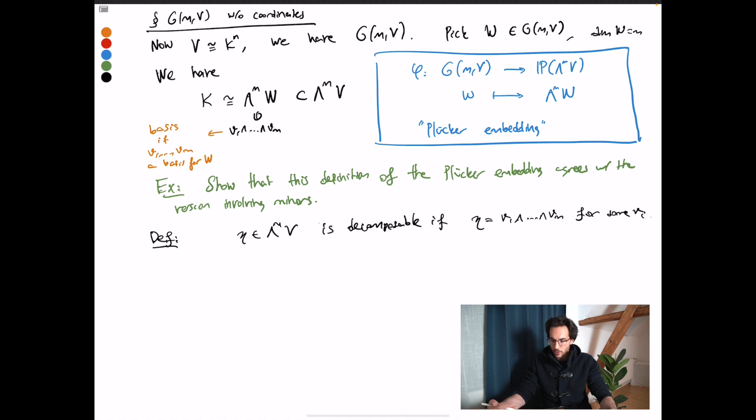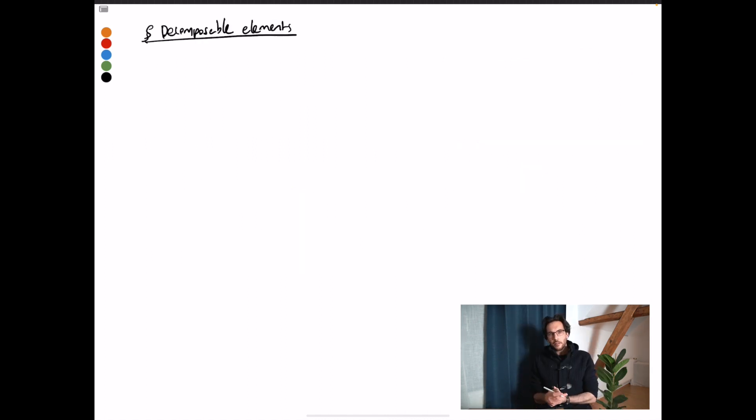On the other hand, if you give me a decomposable element, such as this one eta here, v_1 wedge v_m, then the vectors v_1 through v_m will span a subvector space of V. This subvector space has to be of dimension m if eta is non-zero. Therefore, every non-zero element that is decomposable actually comes from an m-dimensional subspace. Let's study then the locus of decomposable elements a little better to give another interpretation of the Grassmannian in terms of pure linear algebra, one could say.